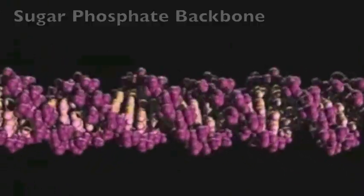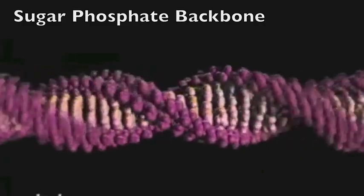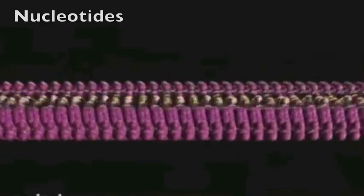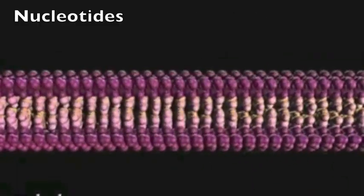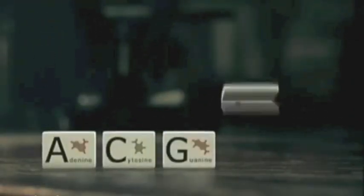The outside is a sugar phosphate backbone. Inside are the rungs of the ladder, nucleotides. These nucleotides are adenine, cytosine, guanine, and thymine.